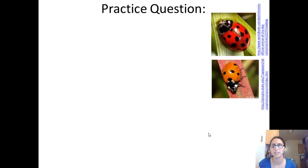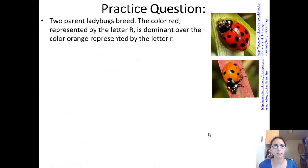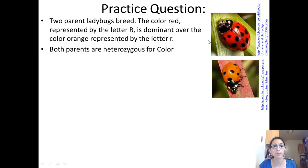The next practice question is about ladybugs. Two parent ladybugs breed. The color red is represented by big R and is dominant over the color orange, which is represented by little r. Both parents are heterozygous for color, meaning they have a dominant allele and a recessive allele, so they will both appear red because red is dominant over the recessive orange allele.